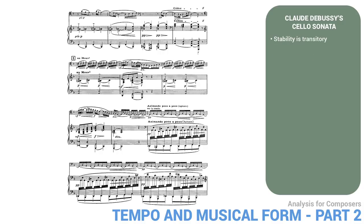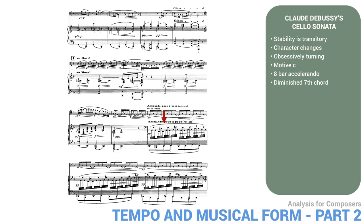Indeed, the musical stability of the last few bars proves transitory. Although the tempo returns to the ANIMANDO, the music's character changes. The cello speeds up, moving into 16th notes, and then some triplet 16ths, even a few 32nds. The piano also gradually speeds up. In the fifth bar after rehearsal 1, the last three beats of the cello begin to turn obsessively around three 16th notes — C, A, and G — in the low register. They come from motive C. Now the tempo begins an 8-bar accelerando. Until the last bar of its accelerando, the cello keeps repeating motive C in 16th notes, while the piano accelerates in continuous 32nd notes, cycling around the diminished 7th chord in the bass.